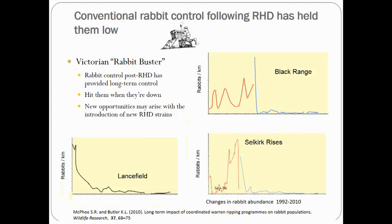Some great examples come from the Victorian Rabbit Buster Program, where the government invested $10 million in rabbit ripping programs after RHD.